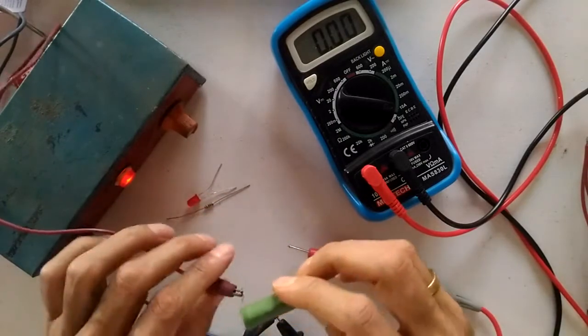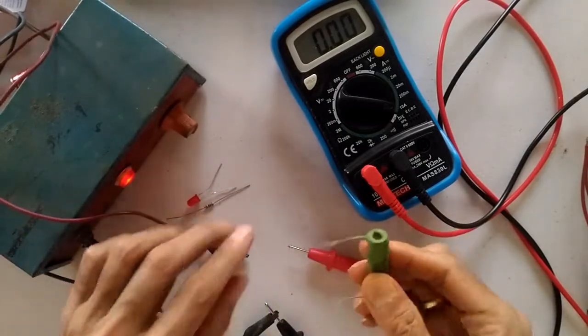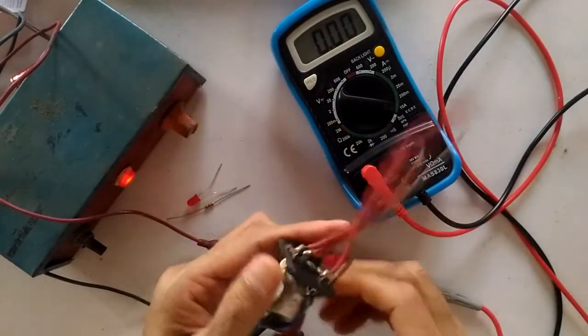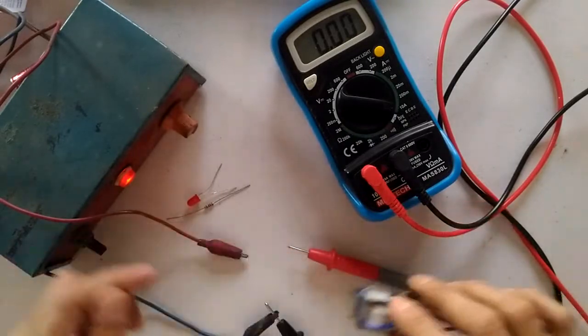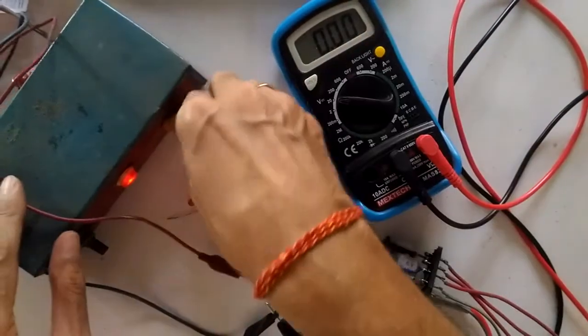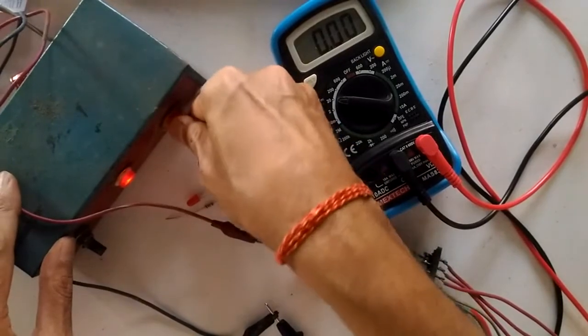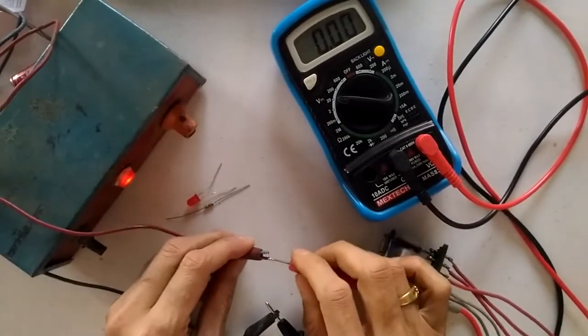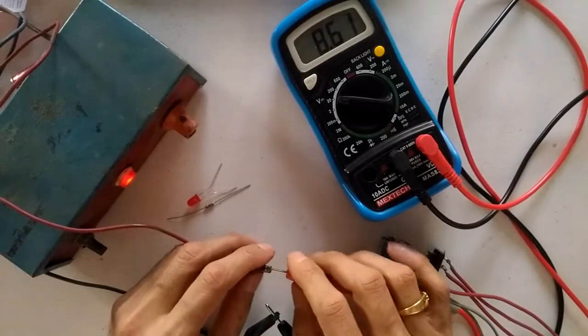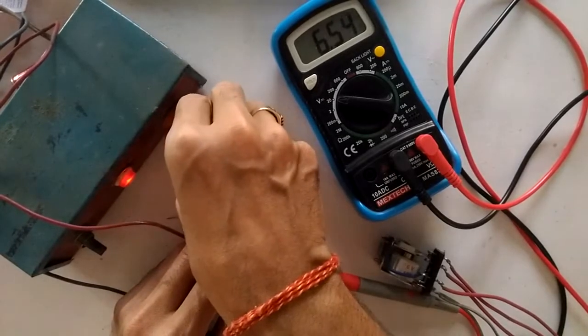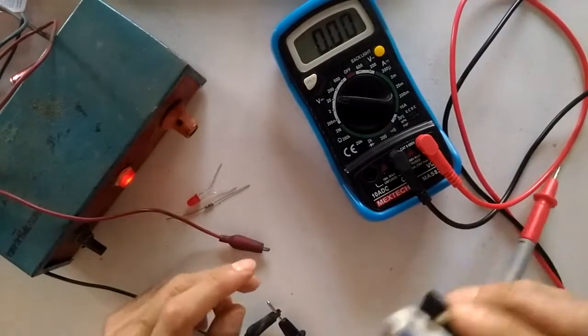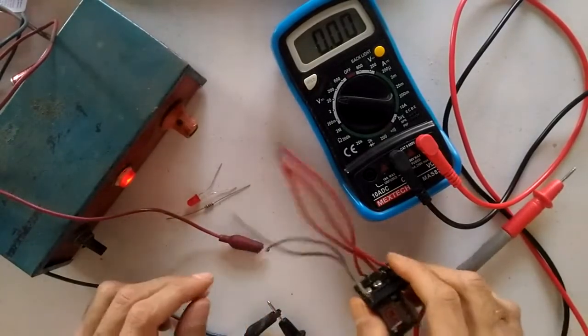Next, we're going to see current for a relay. This is a 6 volt, 100 ohms relay. I'll first set the voltage to nearby 6 volts. So here we have around 6 volts. A 6 volt, 100 ohm relay will technically consume around 60 milliamperes of current.